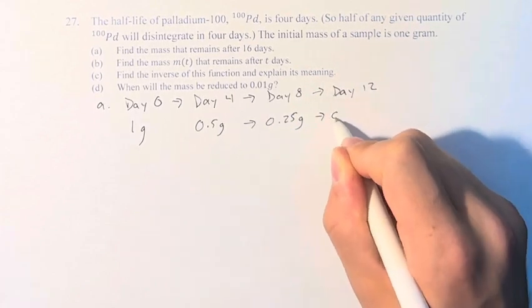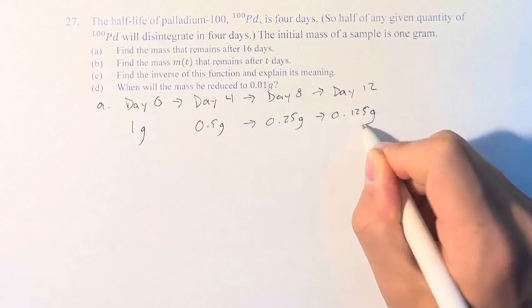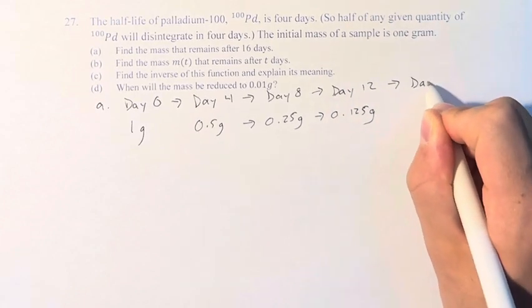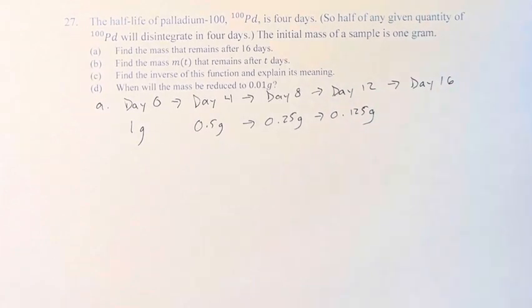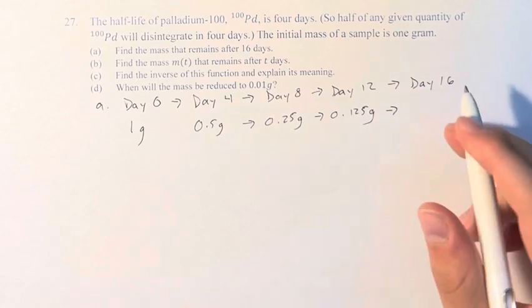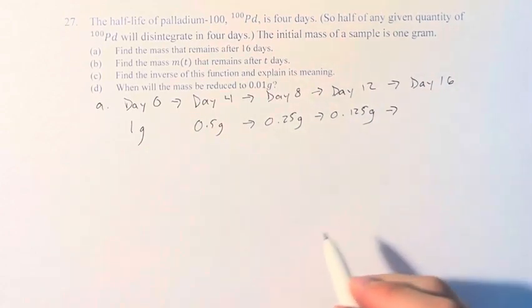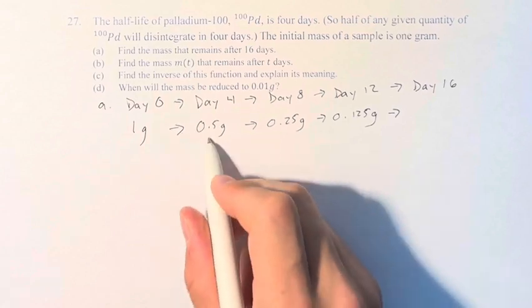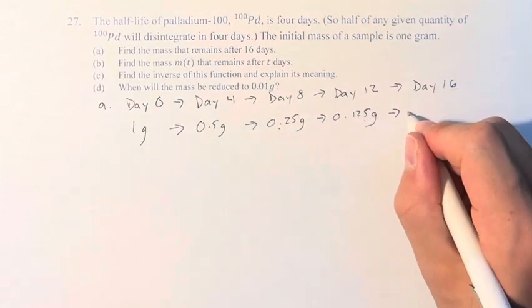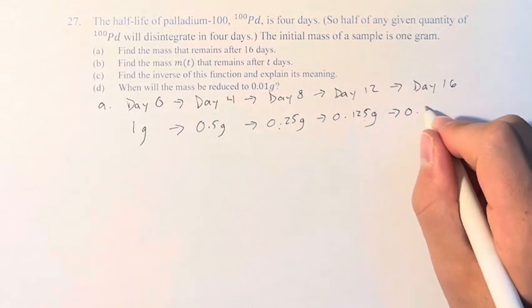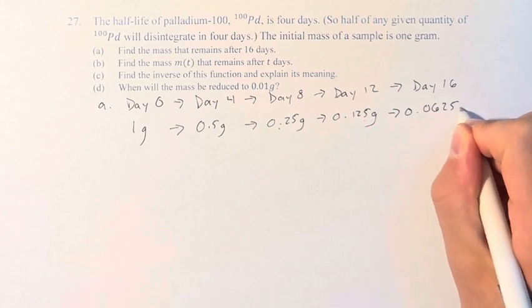4 days later, cut in half again, becomes 0.125. And finally, on day 16, after 4 reductions - 1, 2, 3, 4 - we're left with 0.0625 grams.